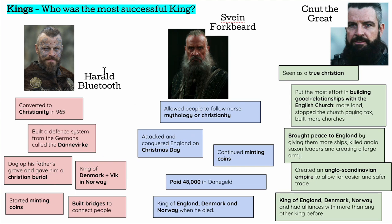By the time of his death, Harold Bluetooth was king of Denmark and Vik, a small part of Norway. Next is his son, Sven Forkbeard, who was a different sort of king — still successful but in different ways. He continued to allow people in Denmark to follow Norse mythology or Christianity. He attacked and conquered England on Christmas Day, though he died a few weeks later. He continued his father's legacy of minting coins and was paid large sums for his raids — making him very wealthy. At the time of his death, he was king of England, Denmark, and Norway.